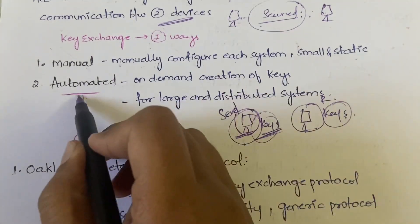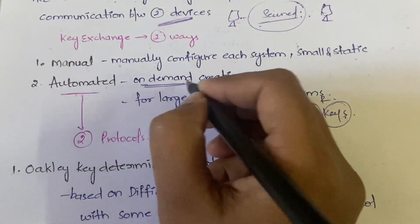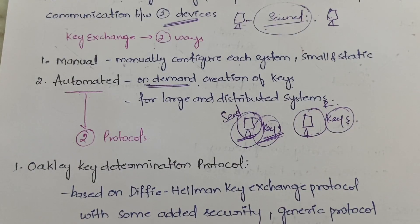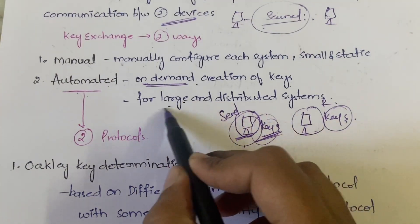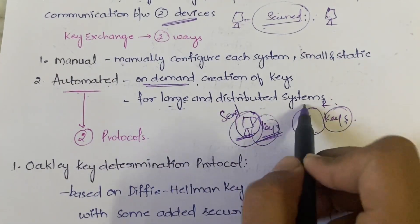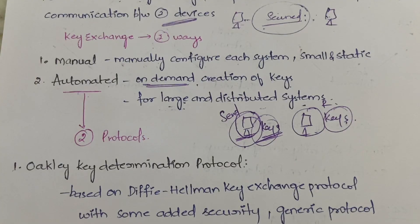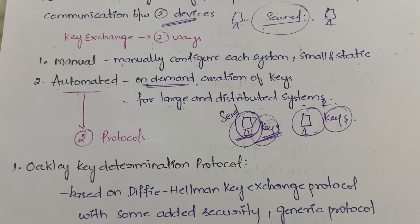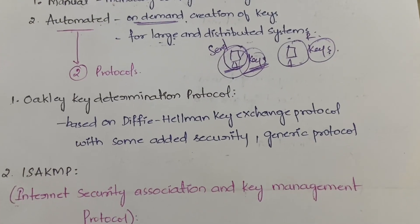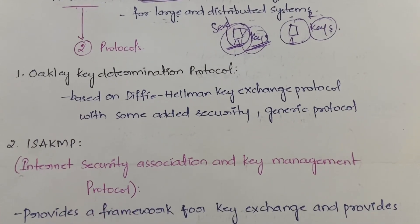In automated key exchange, there is on-demand creation of keys — that is, whenever there is a requirement for keys, keys will be created according to the requirement. Automated key exchange is used in the case of large and distributed systems, where tens, hundreds, or thousands of people are involved in the communication.